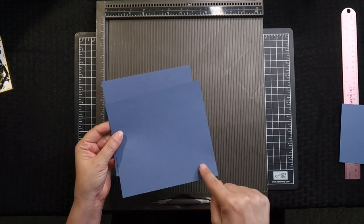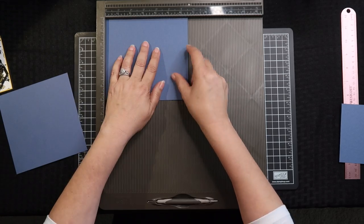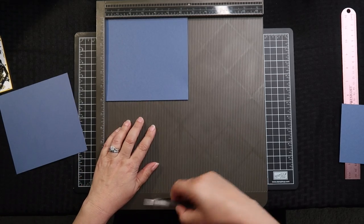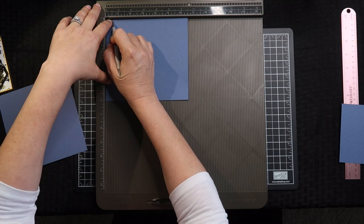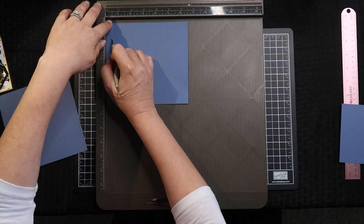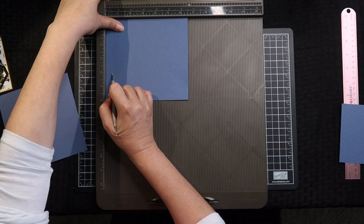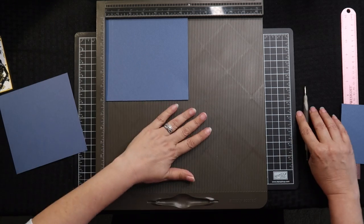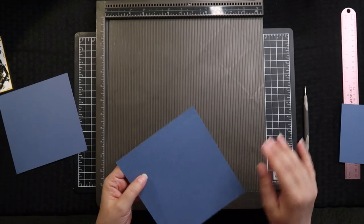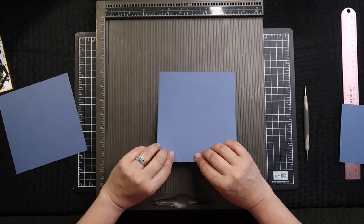So we've got this extra half an inch and what we're going to do is go ahead and score at a half an inch along here without moving it. So this is the Stampin' Up Simply Scored scoring board and it's very easy to use.